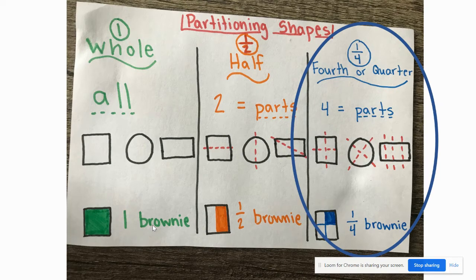Notice our square, our circle, and our rectangle have those red dotted lines. Those are showing our partitions or where we are cutting or breaking the shape into four equal parts. Those partition lines are not in the exact same spot on every shape. That's okay, as long as our quarters end up being four equal parts.